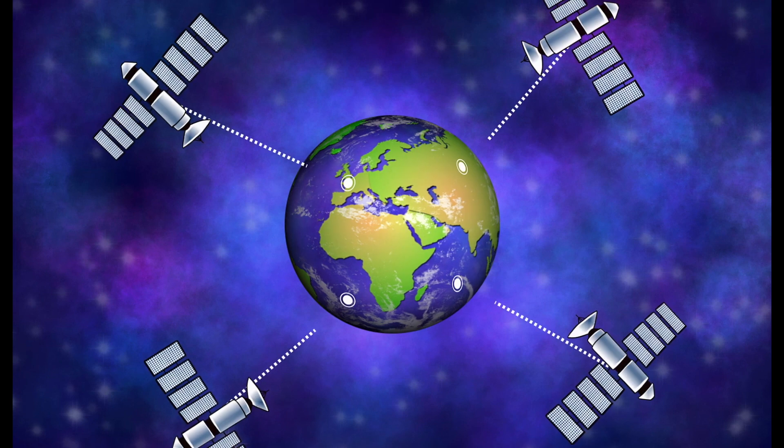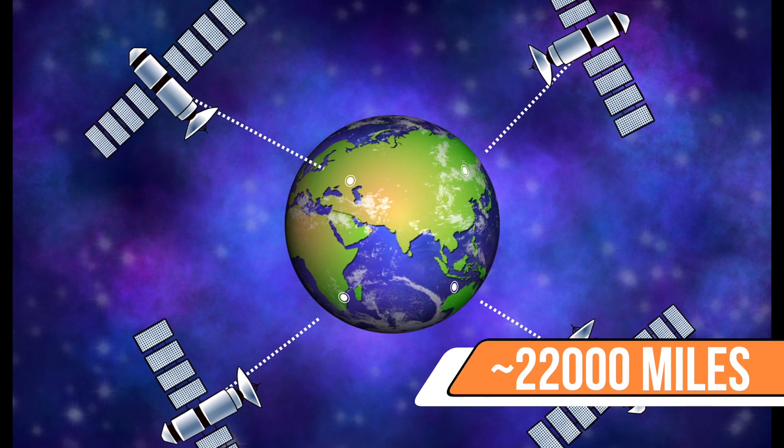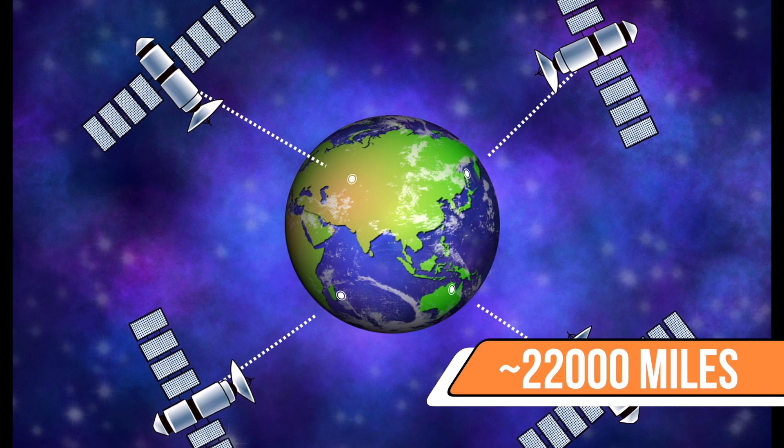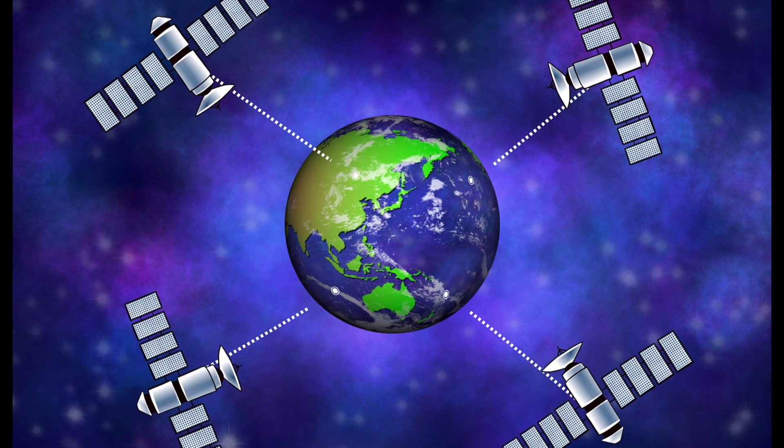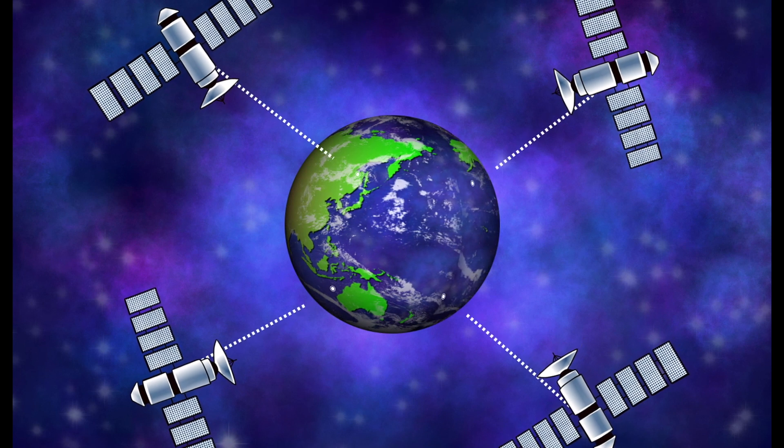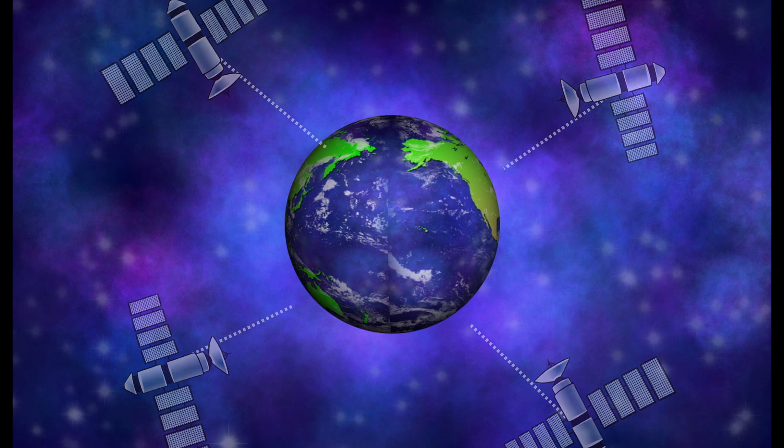Currently, satellite internet uses a few enormous satellites that are traveling over 35,400 kilometers above Earth. While this method is effective, it's not perfect. Due to the distance, there's a significant time delay in sending and receiving data.